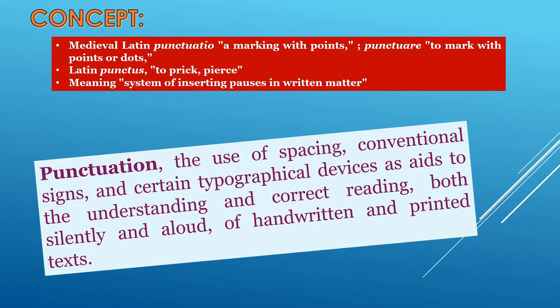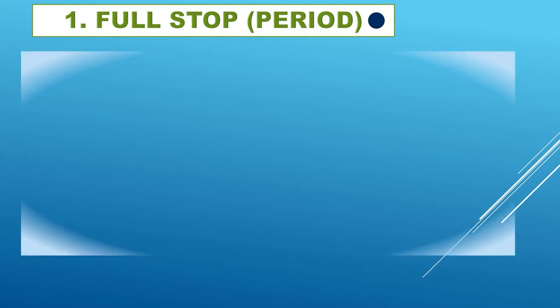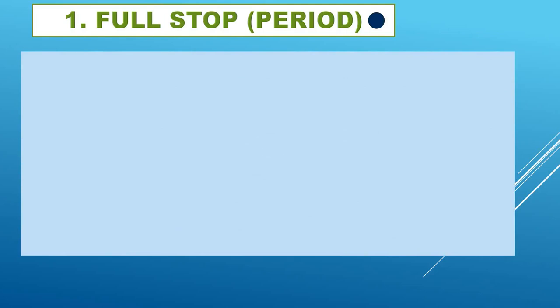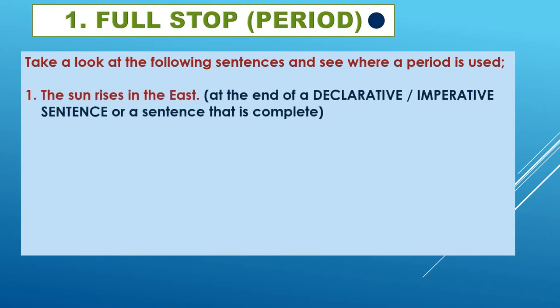Now let us start learning about the different types of punctuations. The first one is the full stop, also called period. In American English, it is also called period. Take a look at the following sentences and see where it is used. It is used at the end of a declarative or an imperative sentence.